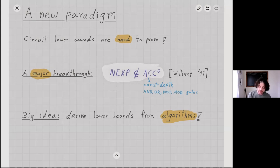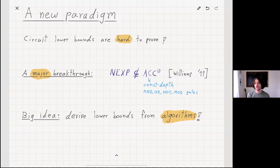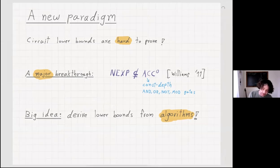To do that, there was a big idea that actually stands at the heart of our work, which is to derive lower bounds from algorithms. It's quite a nice idea to think about how we can use positive algorithmic results to show negative results regarding the power of computation.